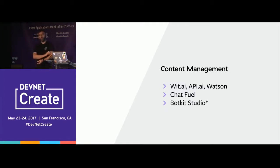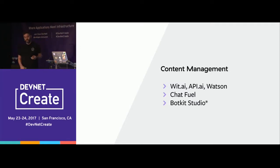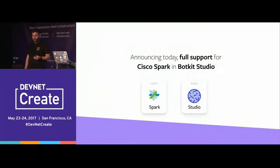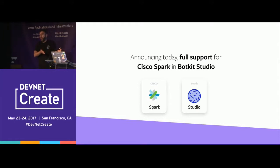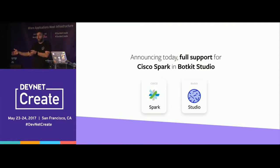So we created a tool called BotKit Studio that allows you to define the entirety of the interaction in a single script. And today we are announcing that you can now build Cisco Spark bots in BotKit Studio. Using Studio, you can go from 'I want to build a bot' to the bot being alive and operating in Cisco Spark, backed by our APIs and running on your own hardware, in a couple of minutes. We have the end-to-end process managed for you.